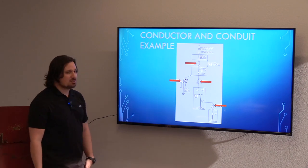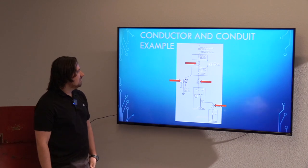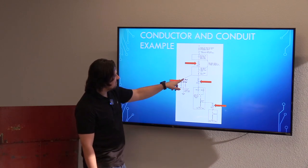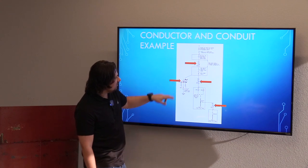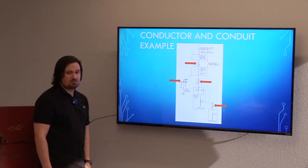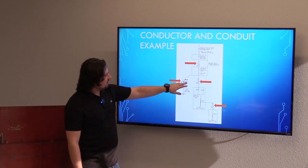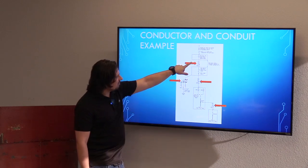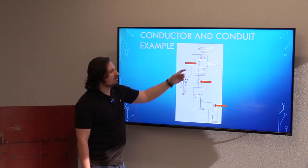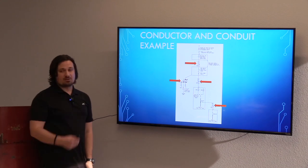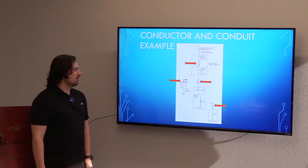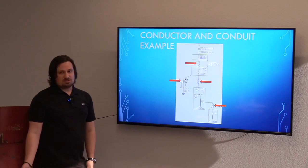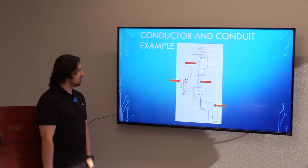Here's a pretty basic example of something we'll typically see out on site. We've got our service entrance with our service conductors, our grounding system, and our MEB and MBJ — that's the main equipment bonding and main bonding jumper. We also have conductors with our equipment ground. You'll see the equipment ground varies from the service ground — technically this number two here is oversized, but that's just a standard we use. There's no code violation for oversizing a conductor — there's only an issue if you're undersizing.